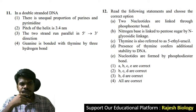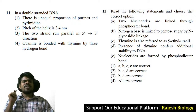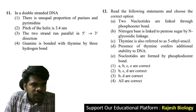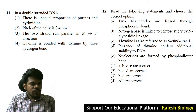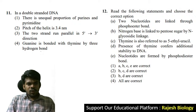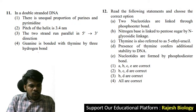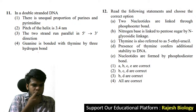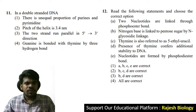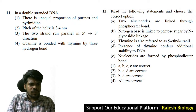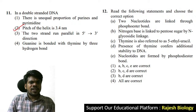Come to the eleventh question in double-stranded DNA. There is unequal proportion of purines and pyrimidines — this is wrong. The pitch of the helix is 3.4 nanometers — this is correct. The two strands run antiparallel in 5' to 3' direction. Guanine is bonded with cytosine by three hydrogen bonds. Chandrika, you are right — the pitch of the helix is 3.4 nanometers.